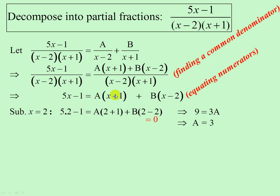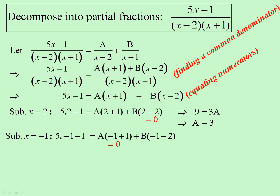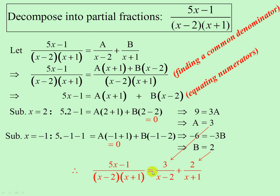Now if I want A to go, I substitute x equals minus 1 — that eliminates A and we get the B value. So now we know A and we know B, and we can write down our final answer.